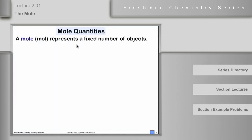A mole represents a fixed quantity of objects of some kind. A mole is analogous to a dozen, or a gross, or some fixed quantity of objects. Now a mole usually refers to chemical things, but in principle you could have a mole of anything.